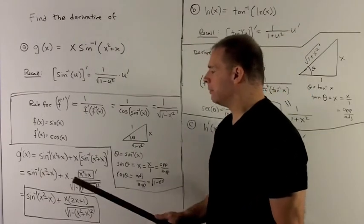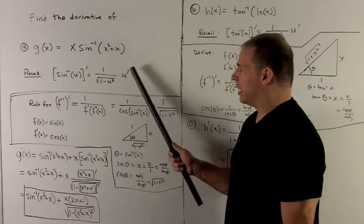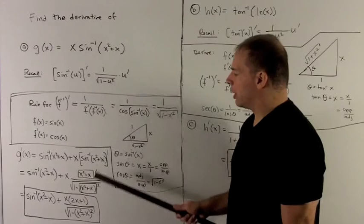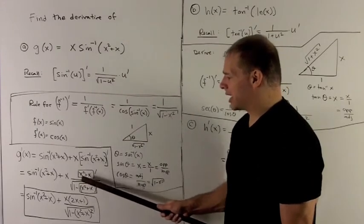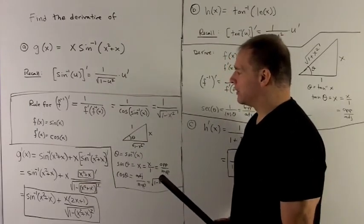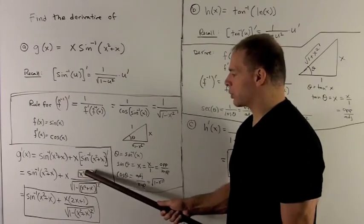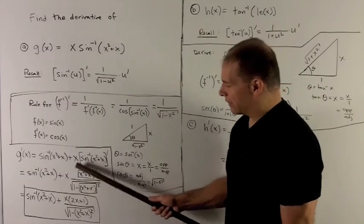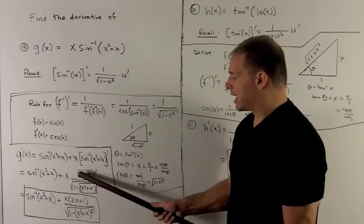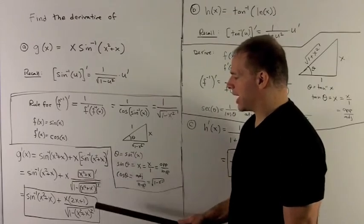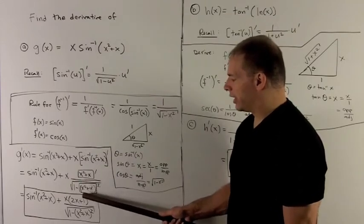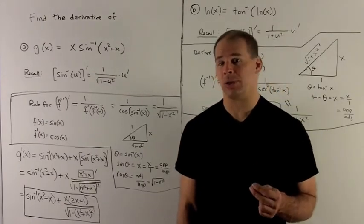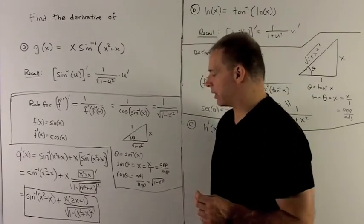I rewrite the first term, leave x out in front, and for the chain rule I write out the inverse sine rule with a box for u and a box with a prime for u prime. I put x squared plus x inside the boxes. For the numerator, the derivative of x squared plus x is just 2x plus 1. We leave the denominator as-is, since we're just demonstrating how the derivative works.